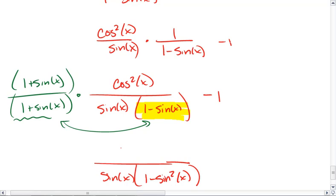In the numerator we have cosine squared x times 1 plus sine of x, all minus 1.